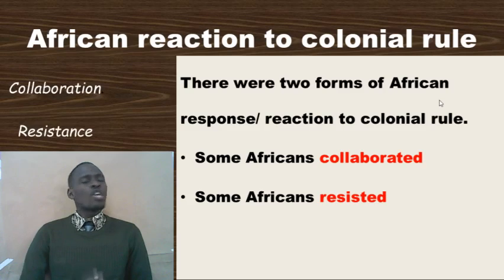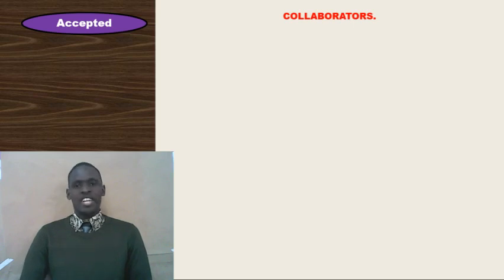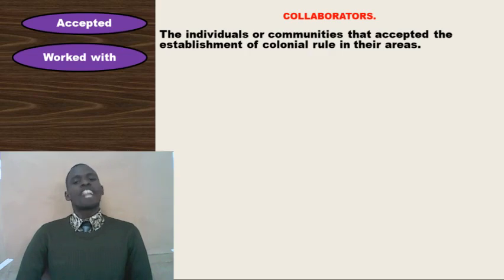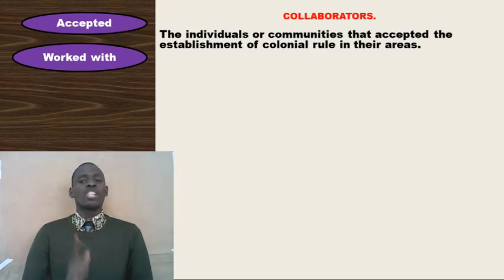There are two important words: collaboration and resistance. Collaborators were the individuals or communities that accepted the establishment of colonial rule in their areas. Key words to use: accepted, or who worked with colonial masters in their areas.